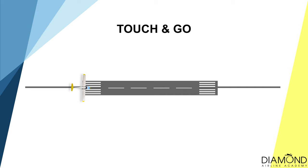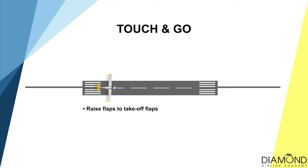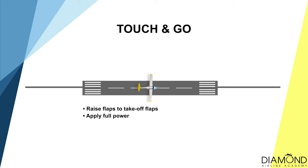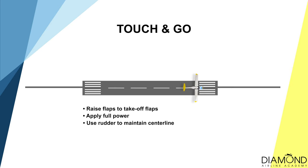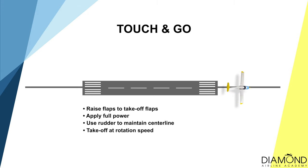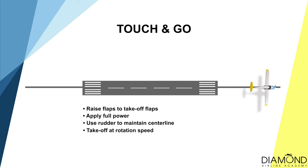If doing a touch and go, first stabilize the aircraft by tracking straight on the centre line. Raise the flaps to take-off flaps, then apply full power when ready and anticipate the sudden left yawing moment — apply right rudder accordingly to maintain centre-line tracking. Pull back on the controls when speed reaches rotation speed to lift off, then climb out at dash on horizon at 70 knots to start the next circuit.